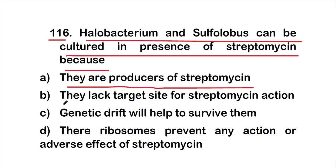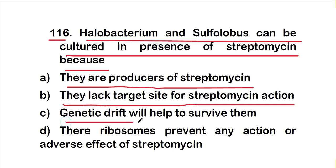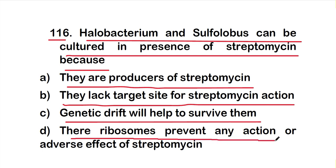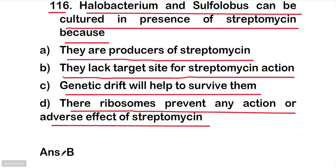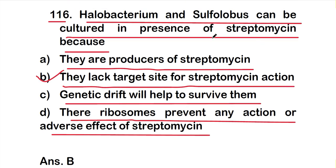Option A: they are producers of streptomycin. Option B: they lack the target site for streptomycin action. Option C: genetic drift will help them survive. Option D: their ribosomes prevent any adverse effect of streptomycin. The right answer is Option B — they lack the target site for streptomycin action, that's why they can grow in the presence of streptomycin.